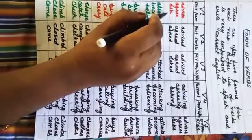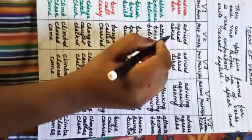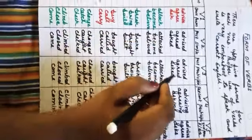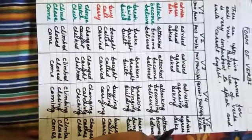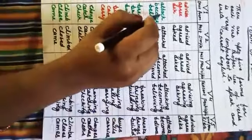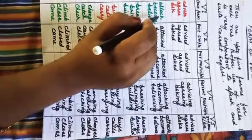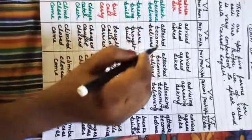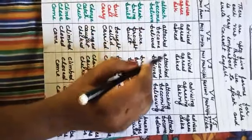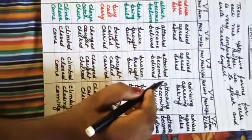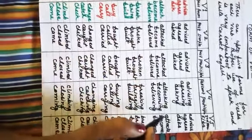Ask — meaning 'puchna' (to ask). Second form: asked. Third form: asked. Fourth form: asking. Fifth form: asks. Attack — meaning 'aakraman karna' (to attack). Second form: attacked. Third form: attacked. Fourth form: attacking. Fifth form: attacks.